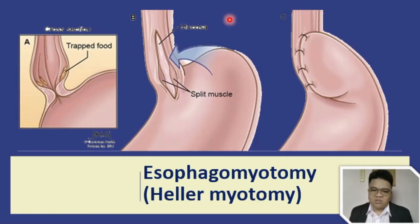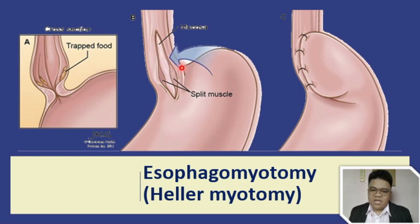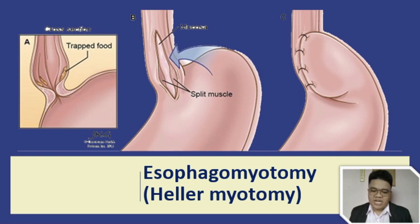We also have esophagomyotomy or Heller myotomy — a surgical procedure in which the muscles of the cardia are cut, allowing food and liquid to pass to the stomach. This is used for management of achalasia to facilitate passage of food. The esophagus is opened and part of the cardia of the stomach is sutured to that part of the esophagus, so food can move towards the cardia of the stomach rather than going through the LES — essentially a bypass or alternative route for the food.